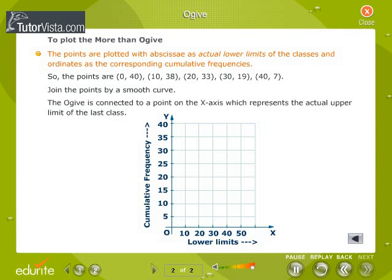To plot the ogive, the points are plotted with abscissae as actual lower limits of the classes and ordinates as the corresponding cumulative frequencies. So the points are (0,40), (10,38), (20,33), (30,19), (40,7).